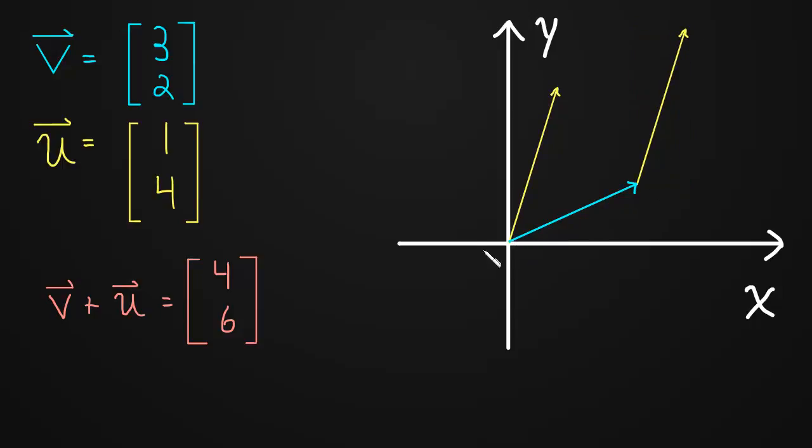So you can see what this corresponds to. This is like going along v plus u. And now the new vector is just the vector that starts at their common starting point and ends at that addition. So that new vector is v plus u, and we know it has components 4, 6.